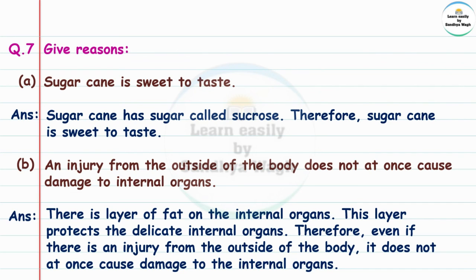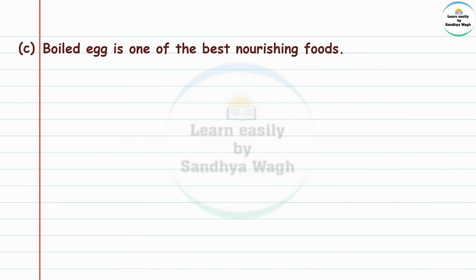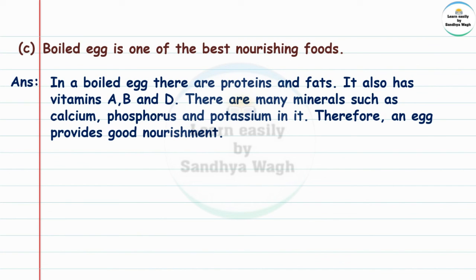Question 7c: A boiled egg is one of the best nourishing foods. Answer: In a boiled egg there are proteins and fats. It also has vitamins A, B and D. There are many minerals such as calcium, phosphorus and potassium in it. Therefore, an egg provides good nourishment.